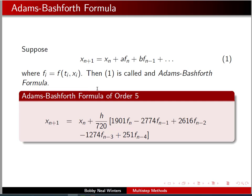Okay, and so this is called the Adams-Bashforth formula. So, the Adams-Bashforth formula of order 5 is x sub n plus 1 is equal to x sub n plus,